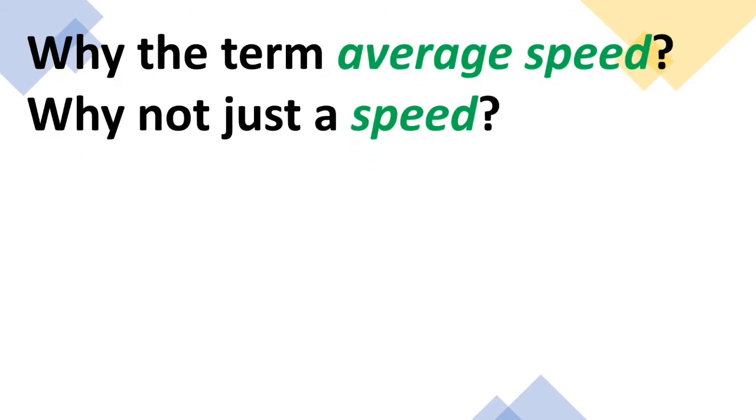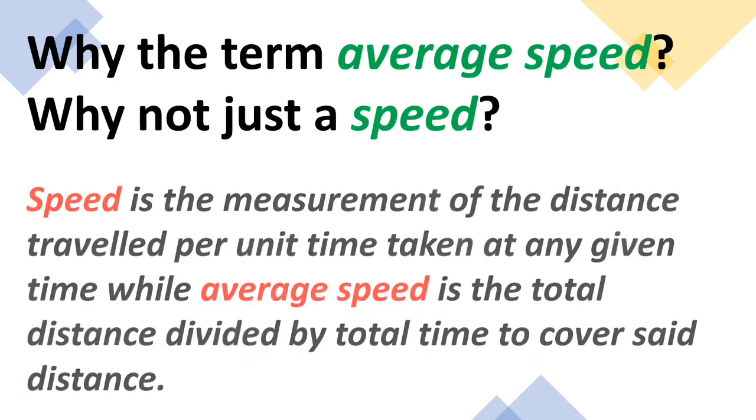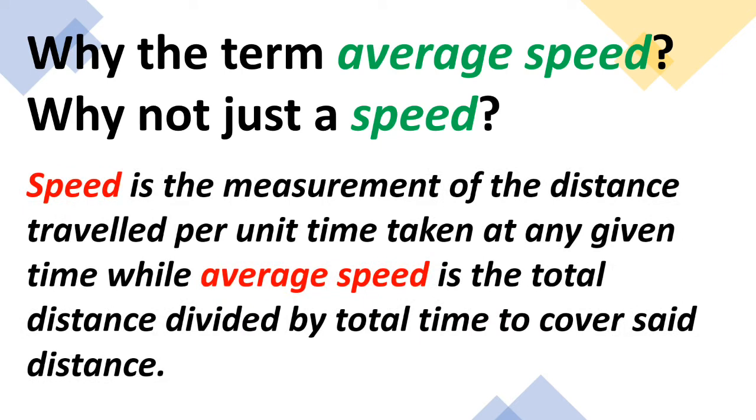Okay, to answer: Why the term average speed? Why not just speed? Speed is the measurement of the distance traveled per unit time taken at any given time, while average speed is the total distance divided by total time to cover the set distance.